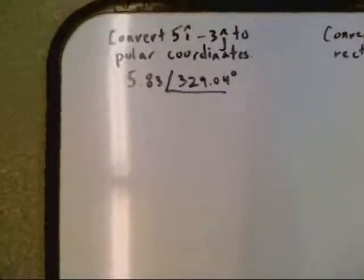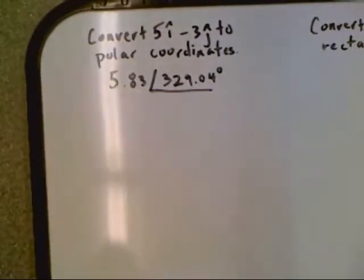Again, it may vary from teacher to teacher, classroom to classroom. Some of your teachers may be okay with the negative 30.96. If they require the positive, you're going to have to put that angle back in your calculator and add 360.